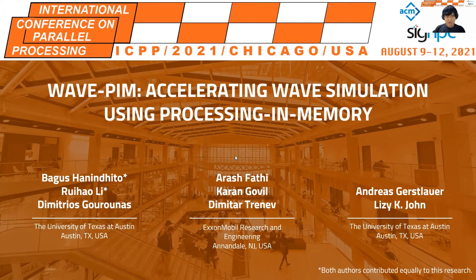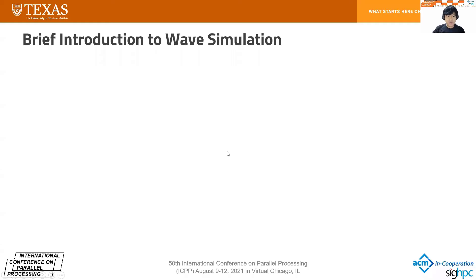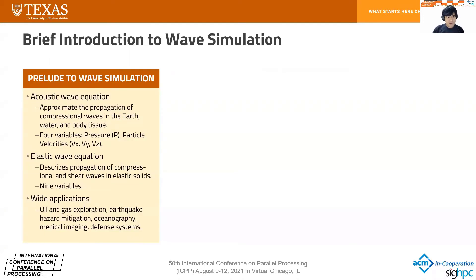Before we go into WavePIM itself, I would like to briefly introduce you to wave simulation. There are two types of equations we want to explore in our work. The first one is the acoustic wave equation, which tries to approximate the propagation of compressional waves in the Earth. The next one is the elastic wave equation, which describes the propagation of compressional and shear waves in elastic solids. We can say that the acoustic wave equation is a subset of the elastic wave equation. Both of them have wide applications from oil and gas exploration, earthquake hazard mitigation, and defense systems.